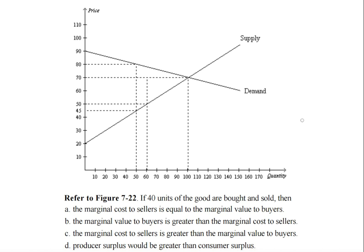The question asks: if 40 units of the good are bought and sold, then... We have a list of choices here. What you do is look at the quantity, which is the x-axis, and you start at 40 and go all the way up right here.